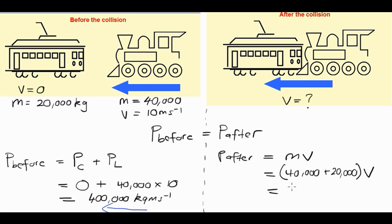So 40,000 plus 20,000 is 60,000, and it's times a common velocity.